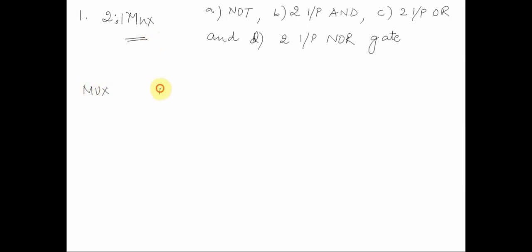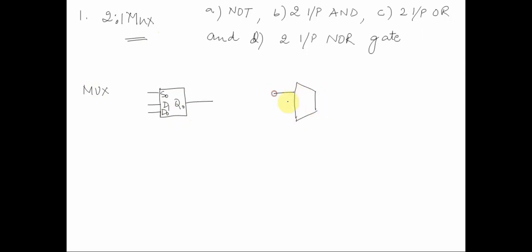A 2-to-1 MUX is something like a box where, depending upon the select line S0, one of the inputs D0 and D1 will be transferred to the output Q0. This is the select line, this is D0, this is D1, and this is the output.